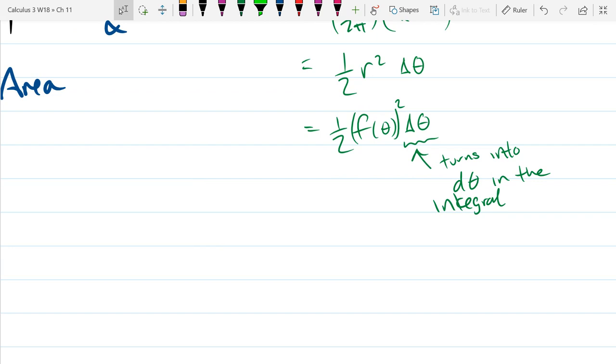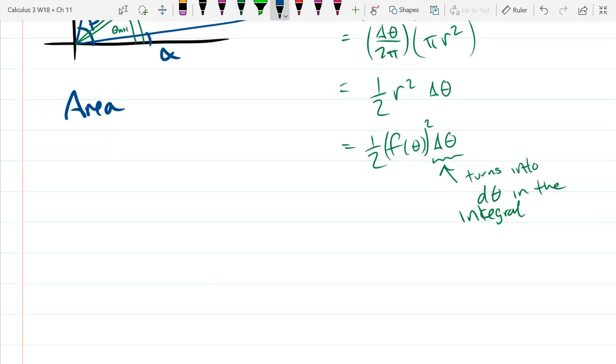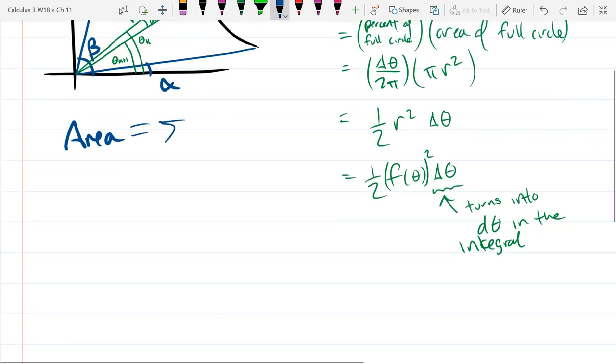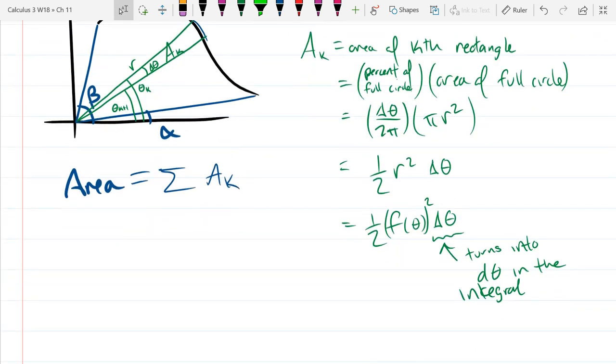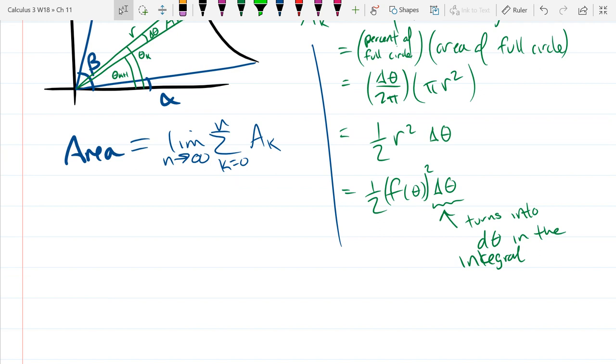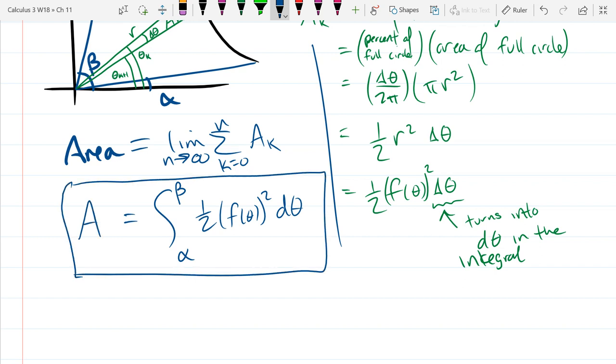So the area is just basically the integral of this expression right here. So the area is the sum of all these, we call them A_k's. Well, you take a limit of the sum, or else it's just an approximation. Lim n approaches infinity, summation. So sum up all the small areas and then take that limit. And of course we write the limit as an integral from little a to b. Oh, α to β is how I wrote it before. α to β. So that's the area formula you need.